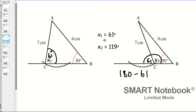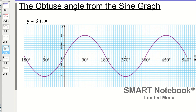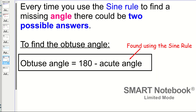To bring the point home: from the sine graph from 0 to 180, when solving equations there can be two solutions — one acute angle less than 90, and one obtuse angle greater than 90. So every time you use the sine rule to find a missing angle, there could be two possible answers. To find the obtuse angle, you do 180 minus the acute angle, where the acute angle is found using the sine rule.